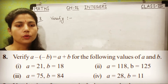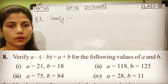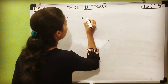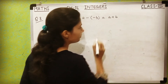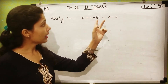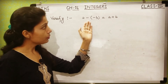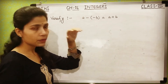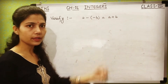Question number 8: Verify that A − (−B) = A + B for the following values of A and B. You have to verify this identity. There are two sides of the equation — right hand side (A + B) and left hand side (A − (−B)). You check both sides for the given values. If they are equal, it is verified.